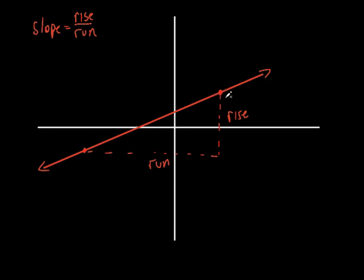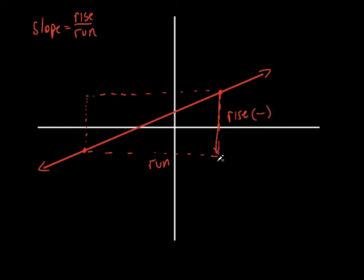Let's talk about the signs. We talked about positive slope and negative slope. You could rise and run the other way — from the bottom point over. It's the same distance either way. If we rise, which direction did we go? We went down, which is a negative number. So the rise would be negative. And from here to here we're going to the left, so the run would be negative as well. But negative divided by negative equals positive — and that's a positive slope. Does that make sense?